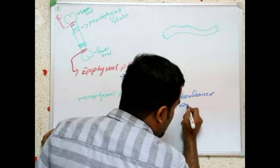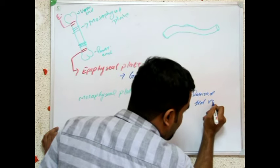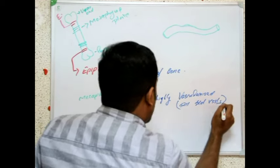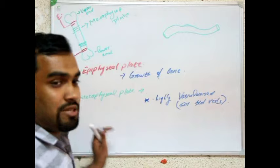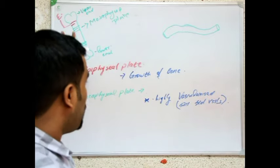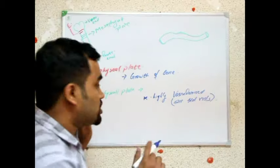All blood vessels are here, and the metaphyseal plate is the weakest part of a bone.